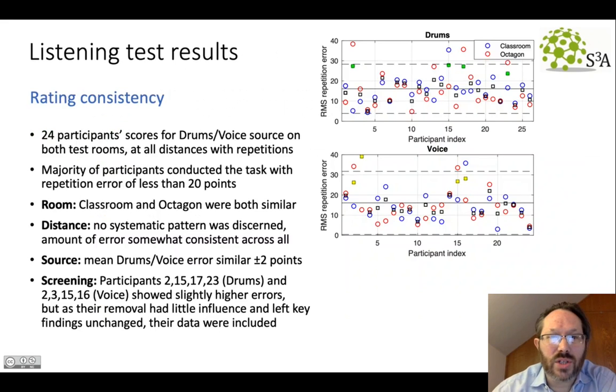So the first question was, did they provide reliable results? We had a look at the repetition error from the repeat trial that they did on each page to see how consistent their values were. Here we have the RMS repetition error for the two different rooms in red and blue with the summary in black across different participants for the drums on top and for the voice below. And overall, they were reasonably consistent and on average, the majority were below 20 points in terms of repetition error.